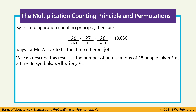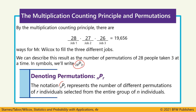This is called a permutation of three objects chosen from a group of 28, written mathematically as 28P3. We say '28 pick 3,' where P indicates a permutation. When we have a permutation, we write it as nPr, where n is the total number of items in the group and r is the number of items we're selecting from that group.